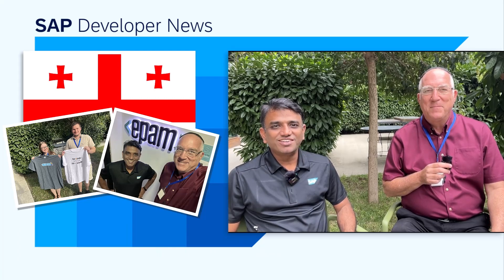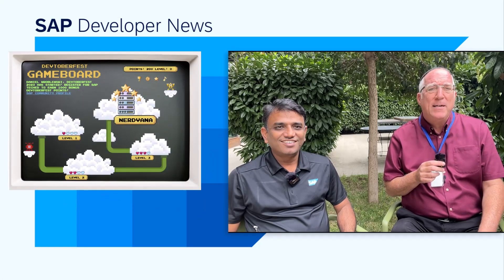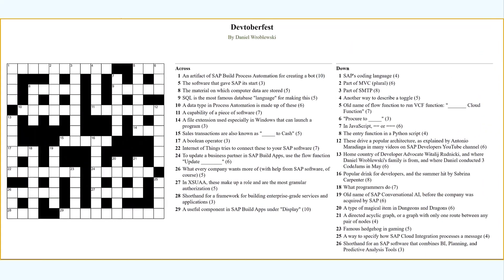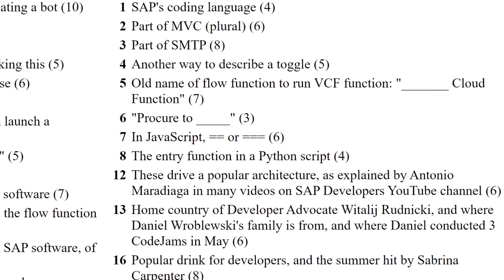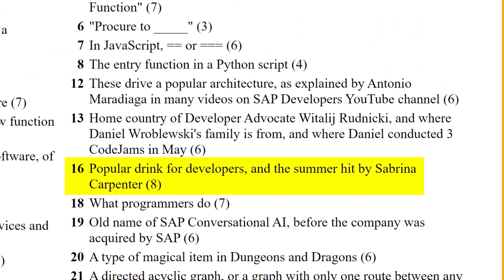Hello everybody. I'm at Tbilisi, Georgia, with Daniel at the EPUB office doing an SAP Build and CAP Code Jam — it's really great to be here. Because it's only a couple of days before DevToberfest, we wanted to tell you about the contest. You can earn enough points to get a trip to TechEd next year. One of the ways to get points is by doing the traditional SAP crossword, which has topics about SAP Build, JavaScript, and even a reference to Analytics Cloud. It would also help to know something about Sabrina Carpenter.